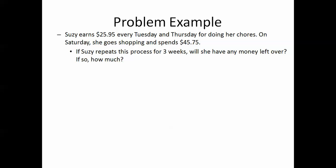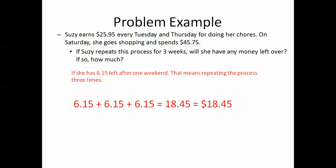Last part of this question. Suzy earns $25.95 every Tuesday and Thursday. But, we are looking at if Suzy repeats this process for three weeks, will she have money left over? If so, how much? Well, if she has $6.15 left over after one weekend, that means the process is repeated three times because we are looking at three weeks. So, she will have $6.15 plus $6.15 plus $6.15, which equals $18.45.